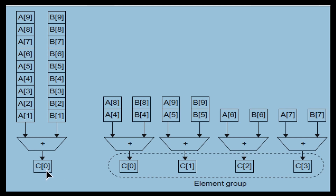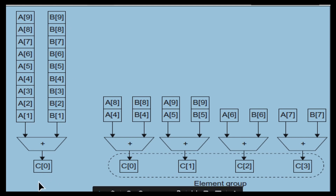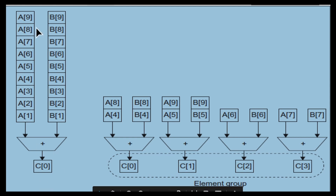In the next clock cycle, automatically the second elements come to the adder — from A and from B — both are added and you get C2. Like that, within 10 clock cycles you can add the two vectors and get the resultant vector. So an ordinary program takes 50 clock cycles, but with SIMD it takes only 10 clock cycles. This requires a special hardware called a SIMD processor.